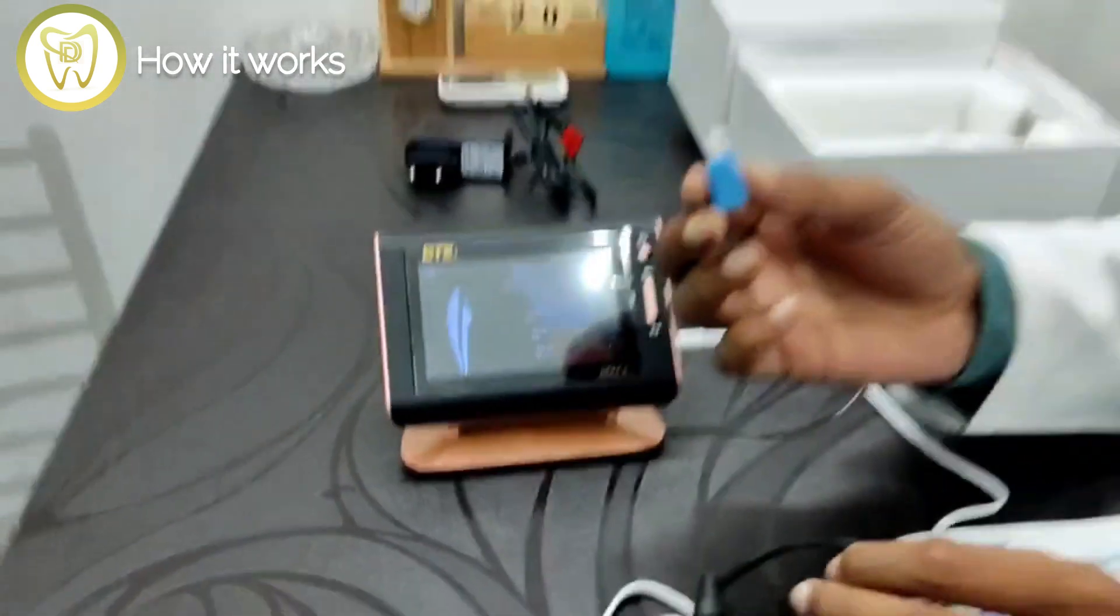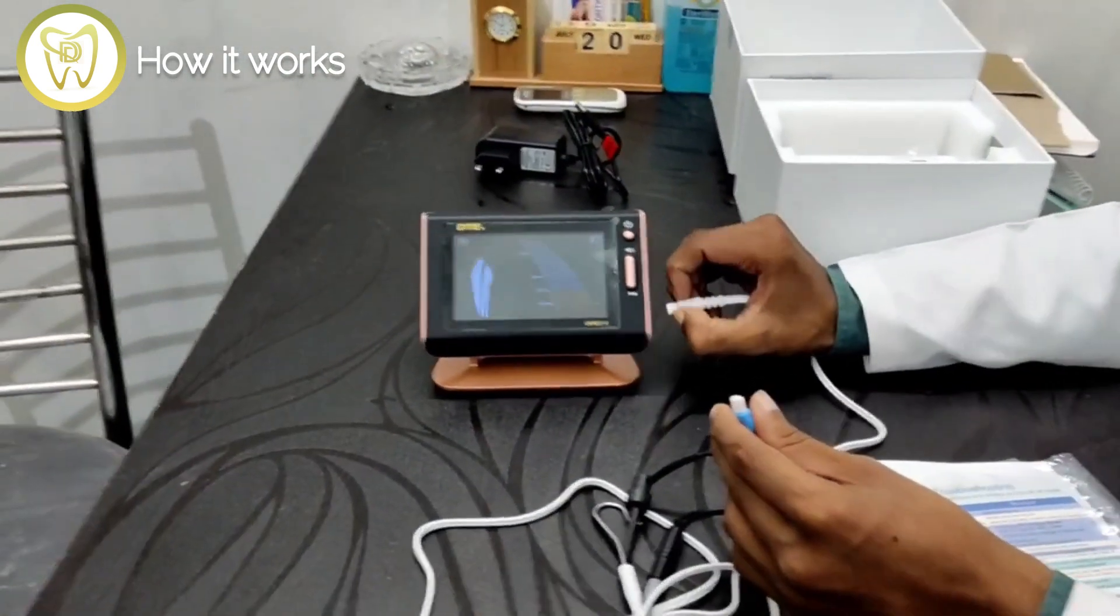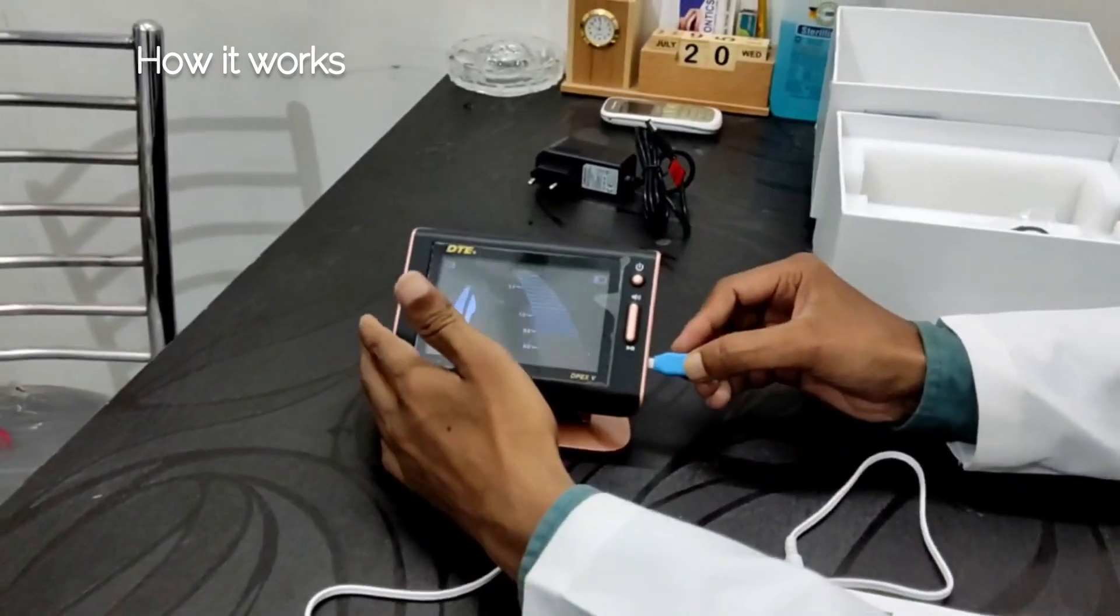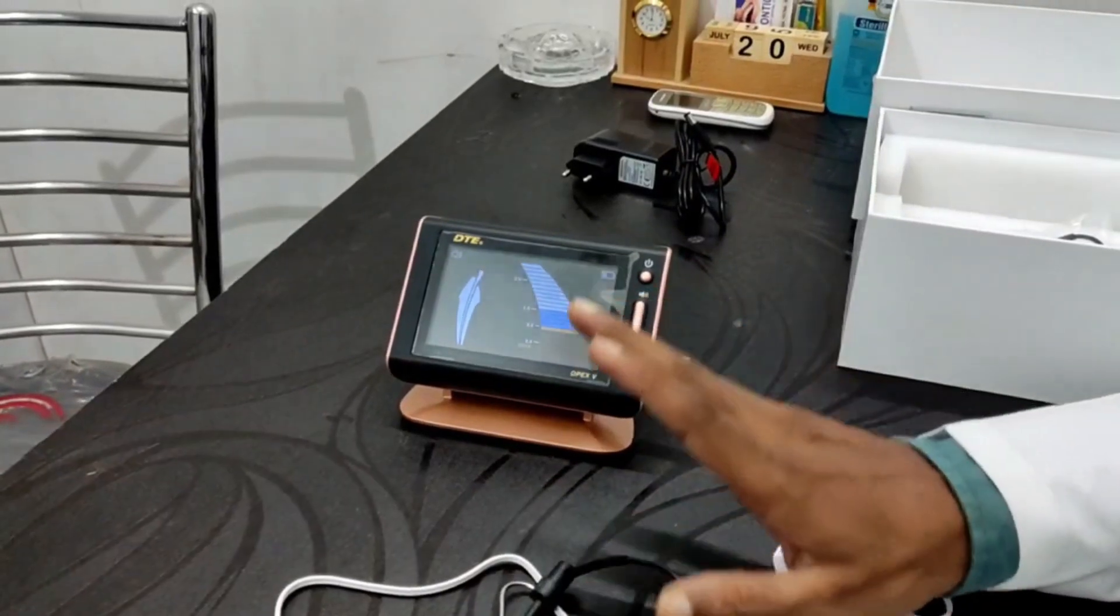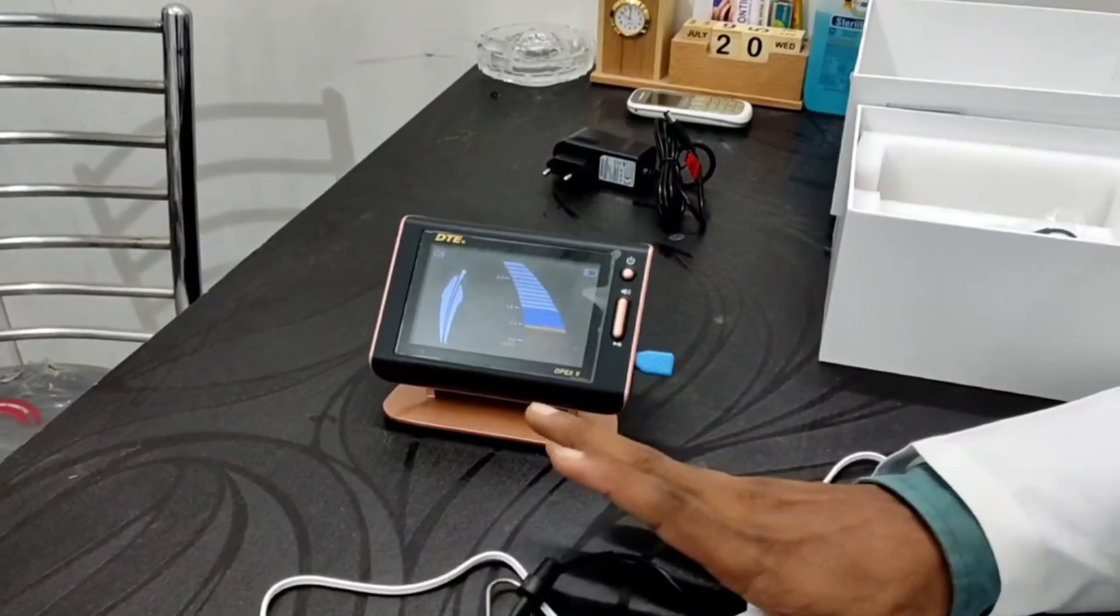And how to use this: you have to unplug it and now plug it. Here some marks are given. This indicates that your apex locator is working in good condition.